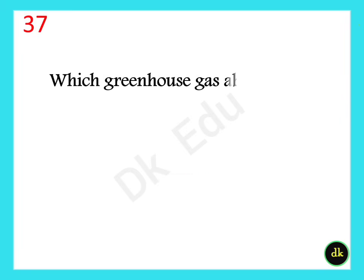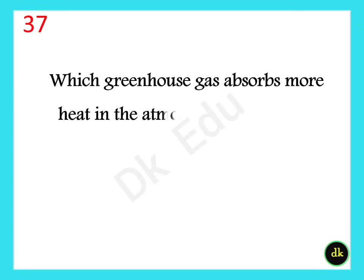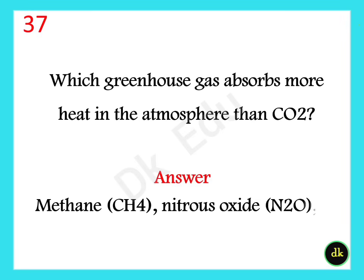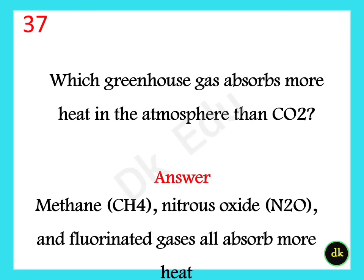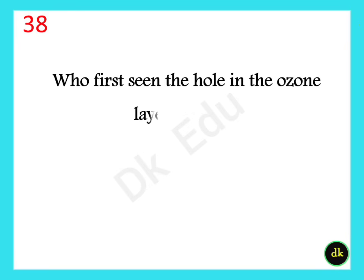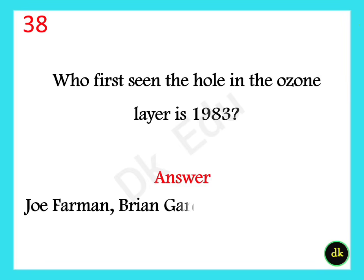Which greenhouse gas absorbs more heat in the atmosphere than carbon dioxide? Methane, nitrous oxide, and fluorinated gases all absorb more heat. Who first observed the hole in the ozone layer in 1983? Joe Farman, Brian Gardiner, and Jonathan Shanklin.